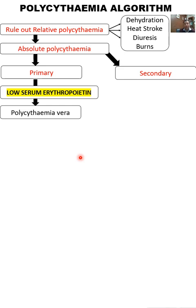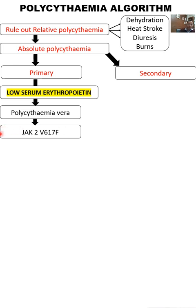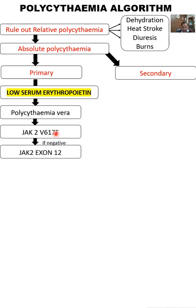In polycythemia vera there is a mutation in JAK2 — specifically JAK2 V617F — which is very important. This mutation is present in 95% of polycythemia vera cases. If JAK2 V617F comes back negative, you should also test for JAK2 exon 12 mutation. A few cases may come positive with this test, which also confirms the diagnosis of polycythemia vera.